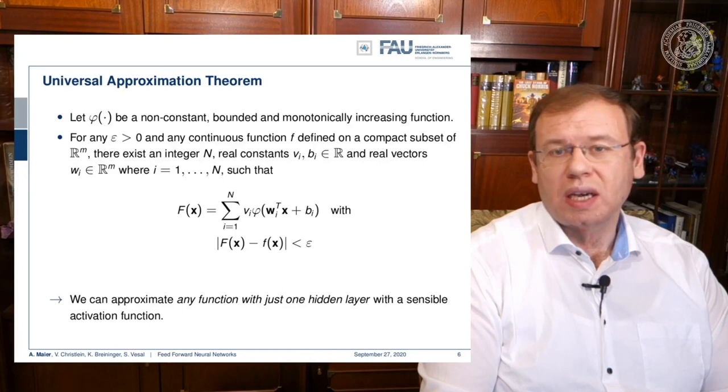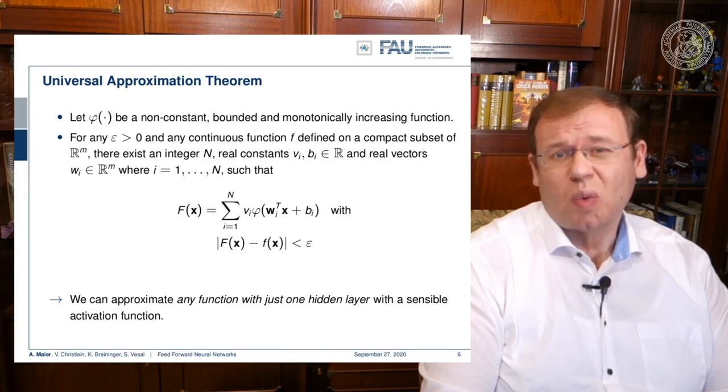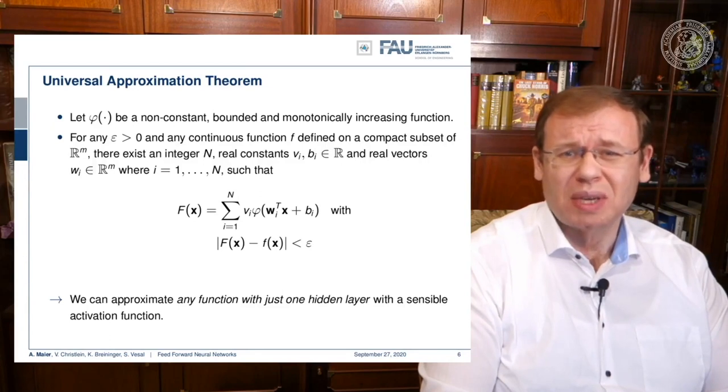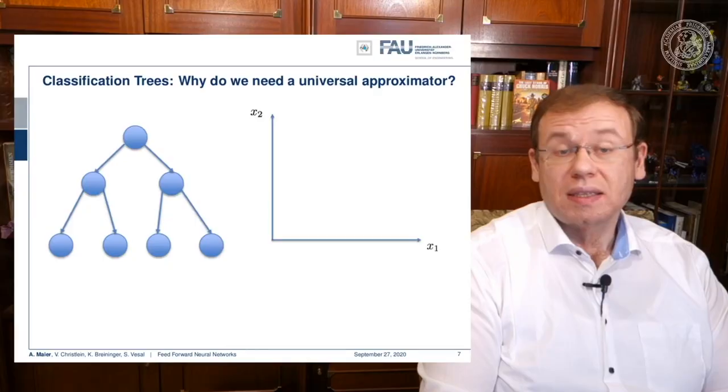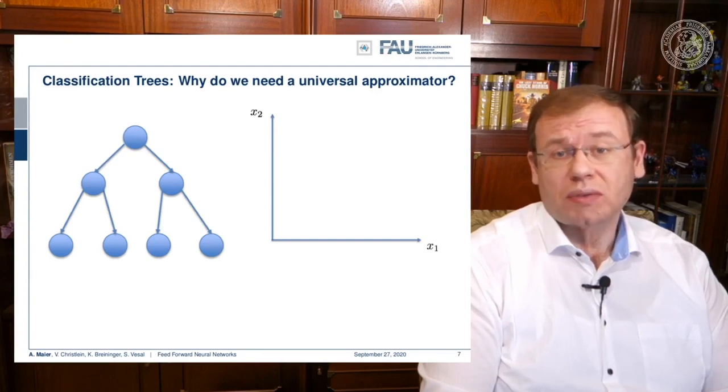So this means we can approximate any function with just one hidden layer. So you could argue if you can approximate everything with a single layer, why the hell are people doing deep learning? Deep learning doesn't make any sense if a single layer is enough.